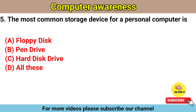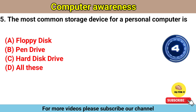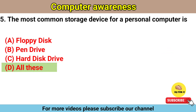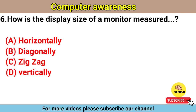The most common storage device for a personal computer is: Option A: floppy disk. Option B: pen drive. Option C: hard disk drive. Option D: all of these. The right answer is option C, hard disk drive.